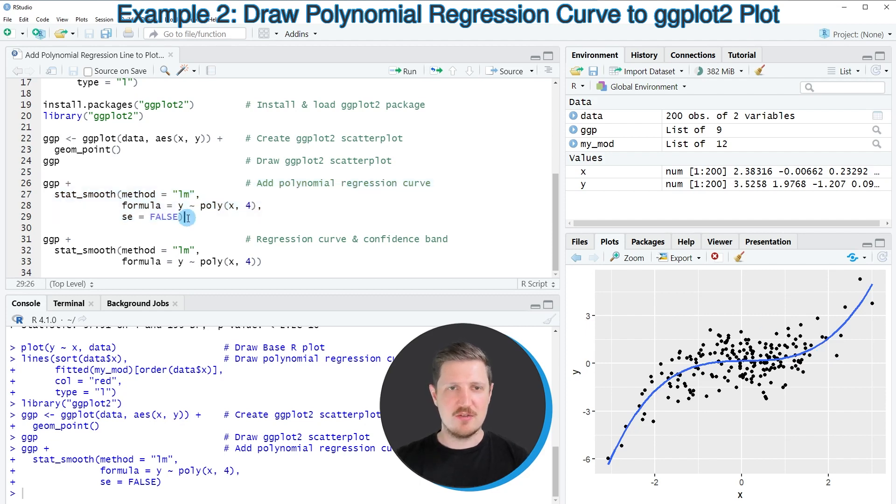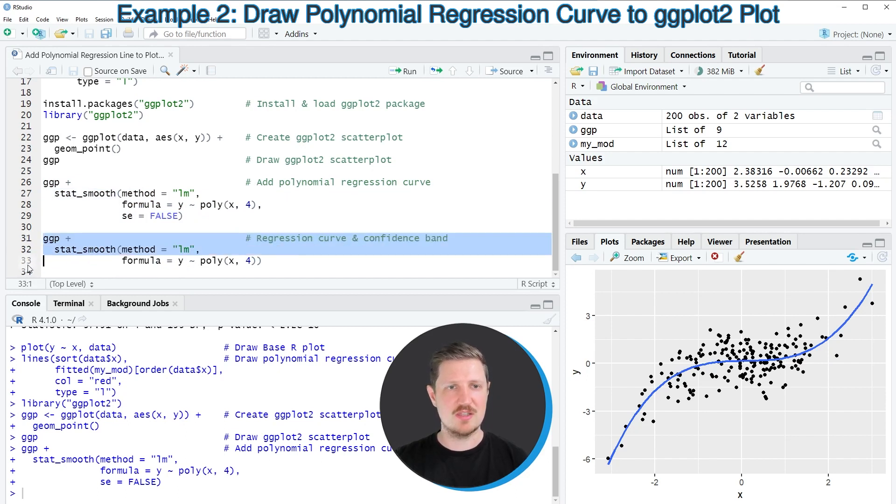Now as I have told you before, in this case I have specified the se argument to be equal to false. However, we can also remove this argument from our stat_smooth call as you can see in the next example in lines 31 to 33. So I'm using exactly the same code as in lines 26 to 28.